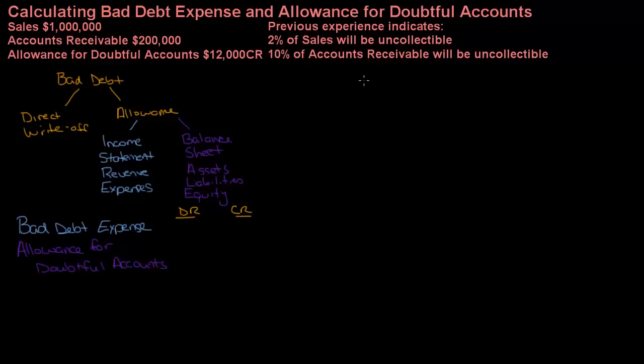For the income statement method, we are going to look at an item from the income statement. If we're given sales and accounts receivable, which one goes on the income statement? Well, that's sales. Previous experience indicates — so we're going to look through our previous collections experience — and it says two percent of sales will be uncollectable. Based on looking five years back, an average of two percent of sales are uncollectable.